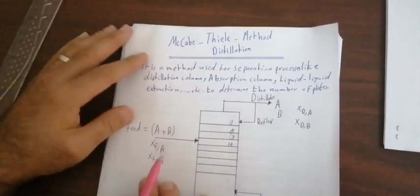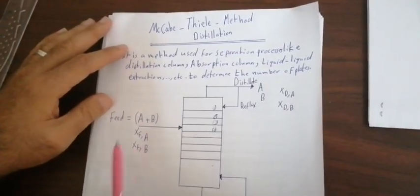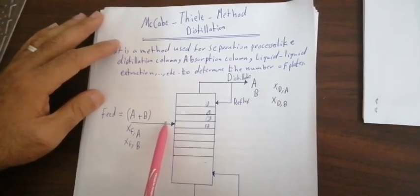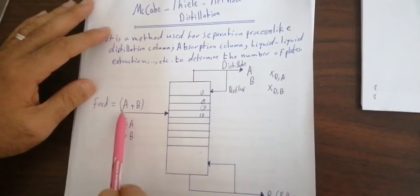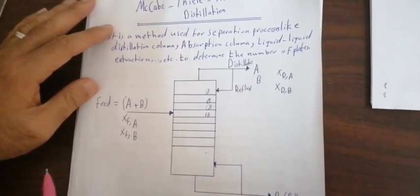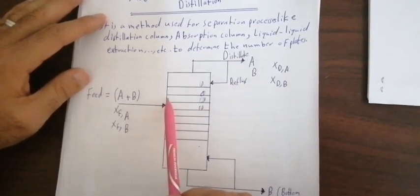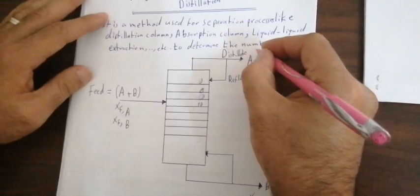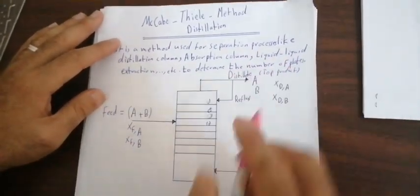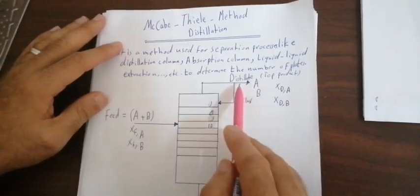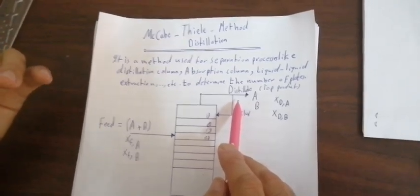The McCabe-Thiele method is used for a binary system — a system with two components. There is one feed input. Compounds A and B are separated: in the top, we get the distillate, also called the top product. The distillate has a high concentration of the more volatile compound, which has a low boiling point and high volatility.